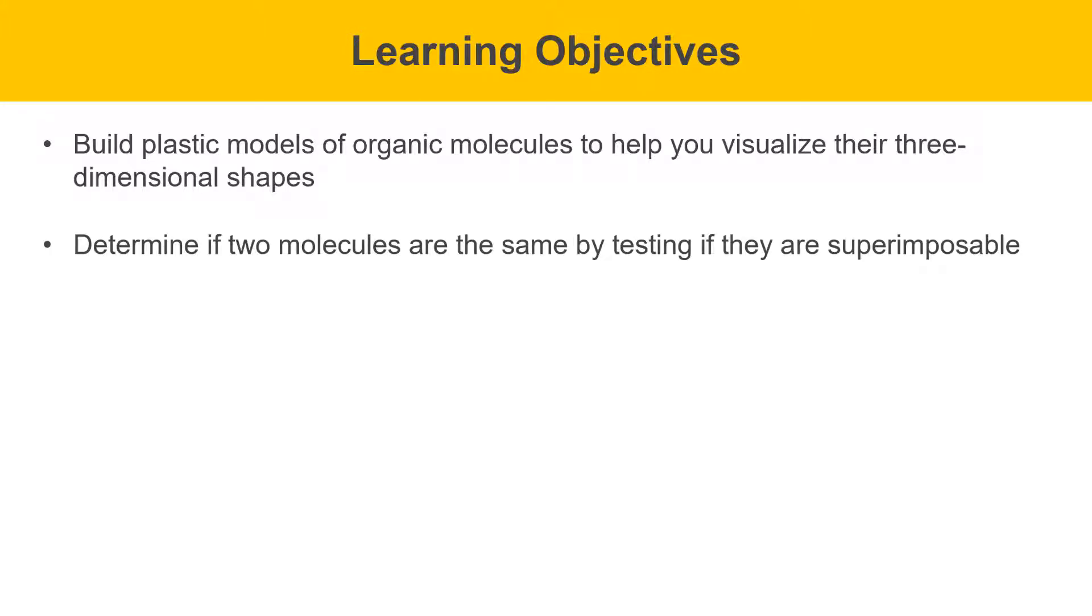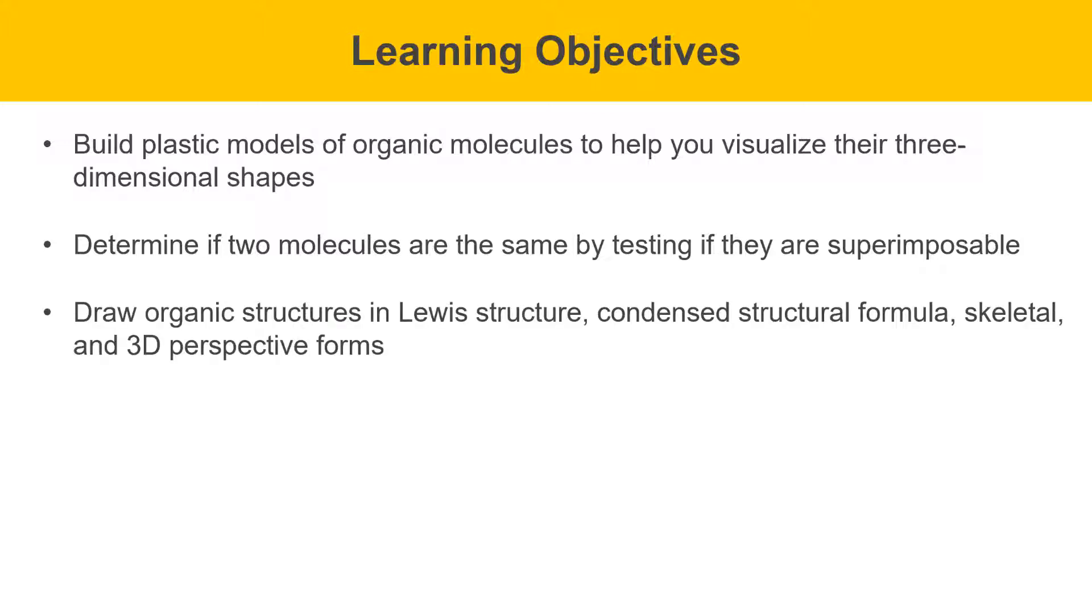We'll determine if two molecules are the same by testing if they are superimposable. In other words, they can be laid on top of each other where all the atoms and bonds match perfectly. We'll draw organic structures in Lewis structure form, condensed structural formula format, skeletal structure form, and 3D perspective forms.